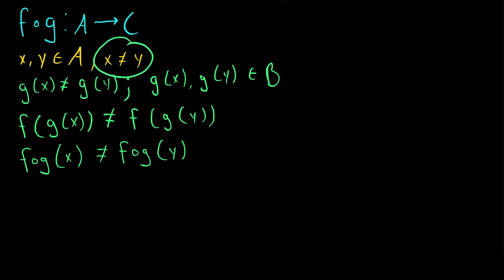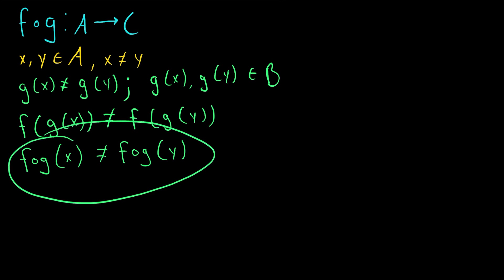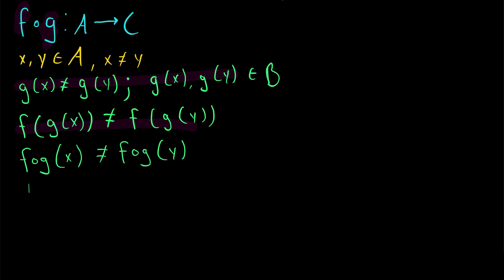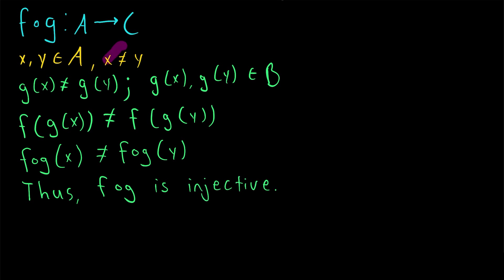If we take any two distinct elements from the domain, their images under the composite function F of G will also be distinct, which followed easily from the fact that G and F are both injective functions. Thus, the composite function F of G is injective — if distinct elements go in, then distinct elements come out.